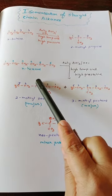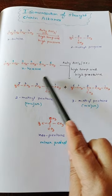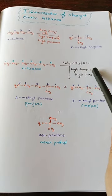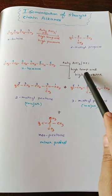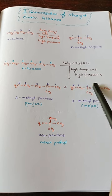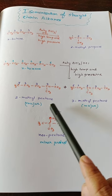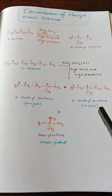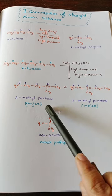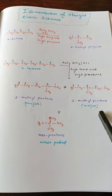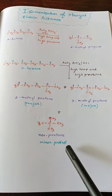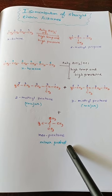Similarly, when N-hexane is treated with anhydrous aluminum chloride and HCl at very high temperature and pressure, we get chain isomers. The major chain isomers are 2-methylpentane and 3-methylpentane. We also can get neopentane, but it will be in minor quantity.